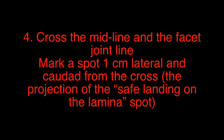Step 4: Cross the midline and the facet joint line. Mark a spot 1 cm lateral and caudad from the cross. This is the projection of the safe landing spot on the lamina.